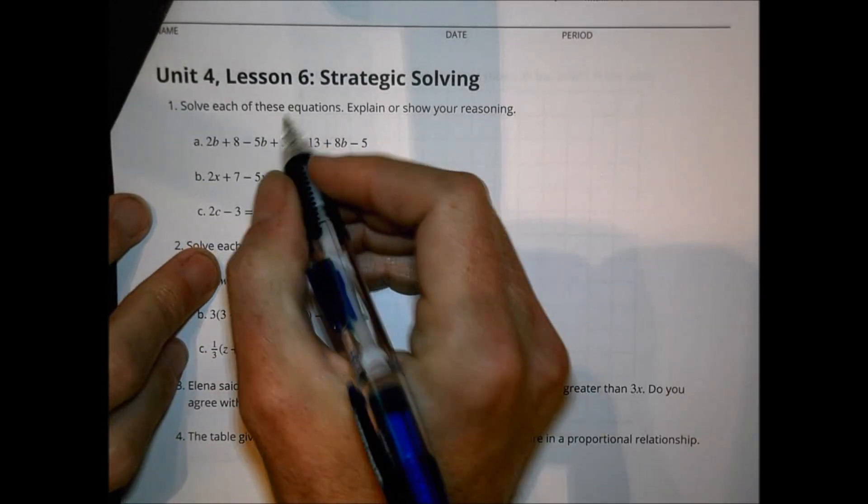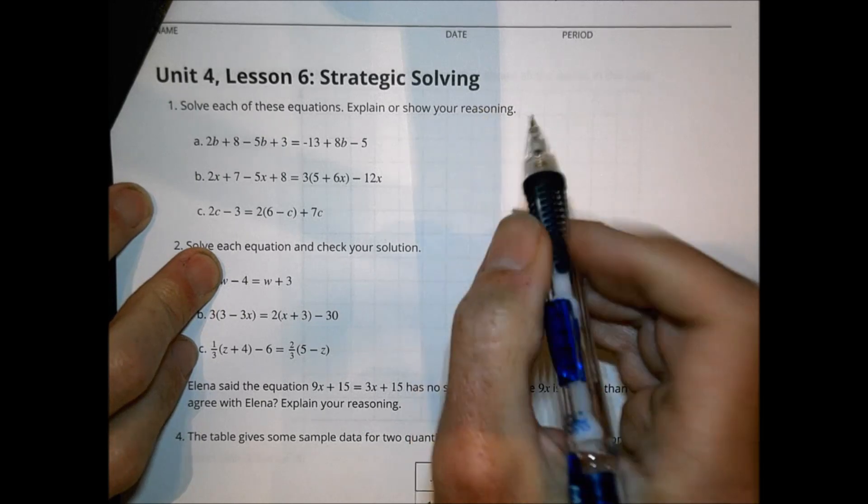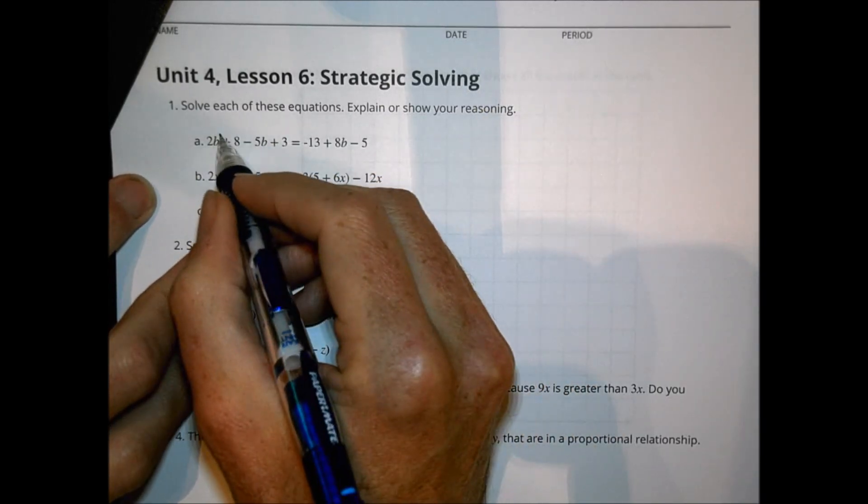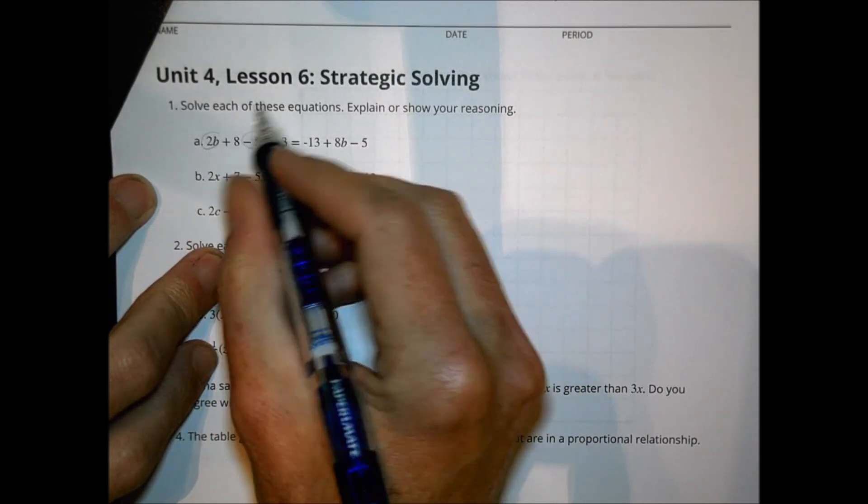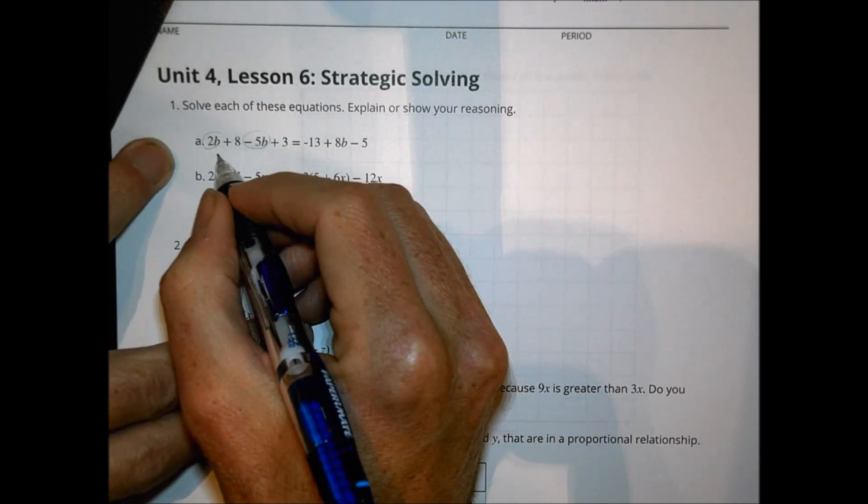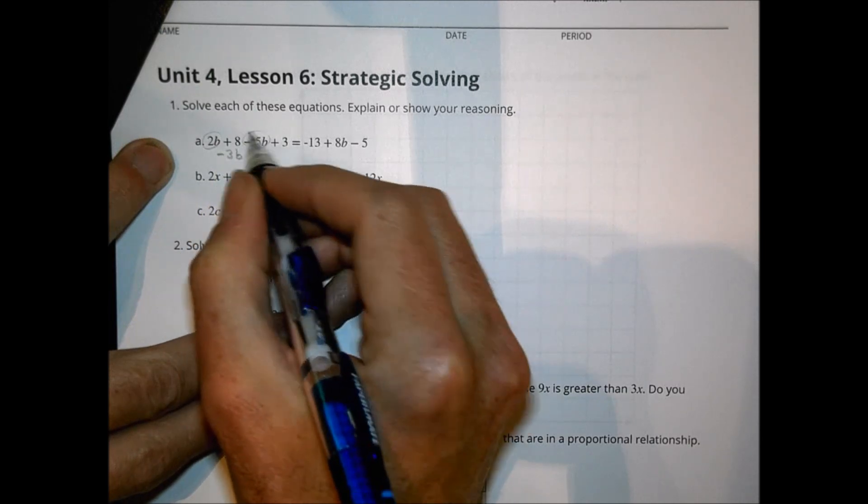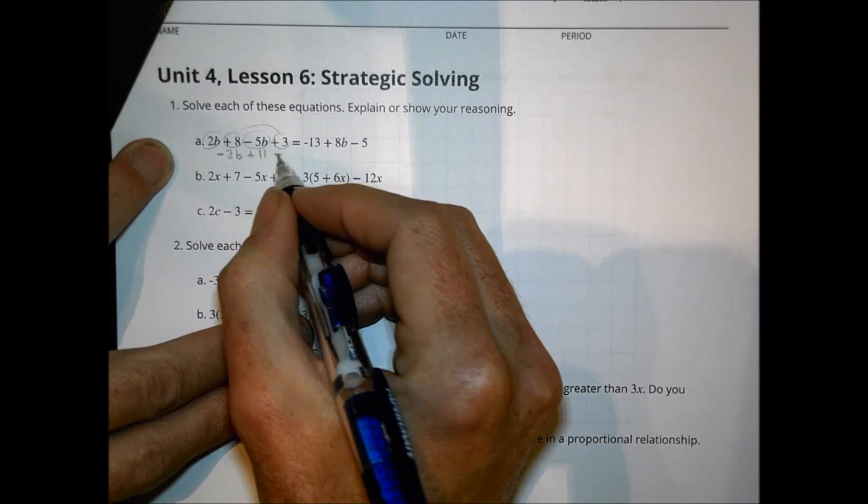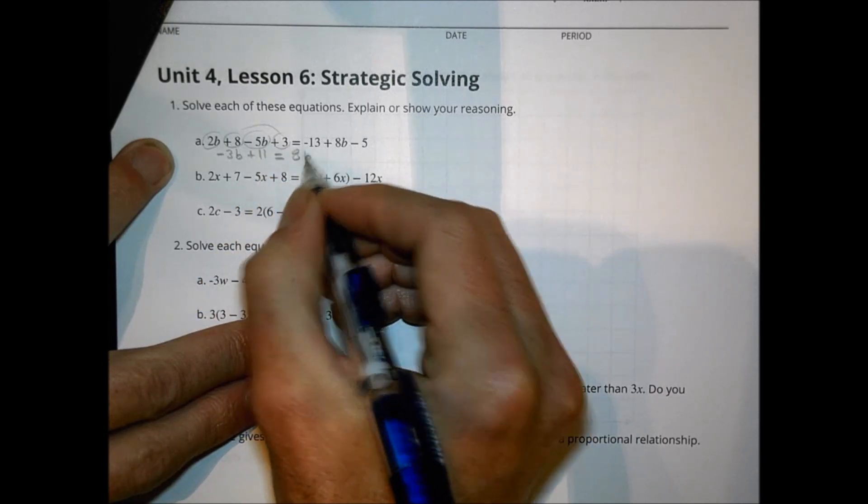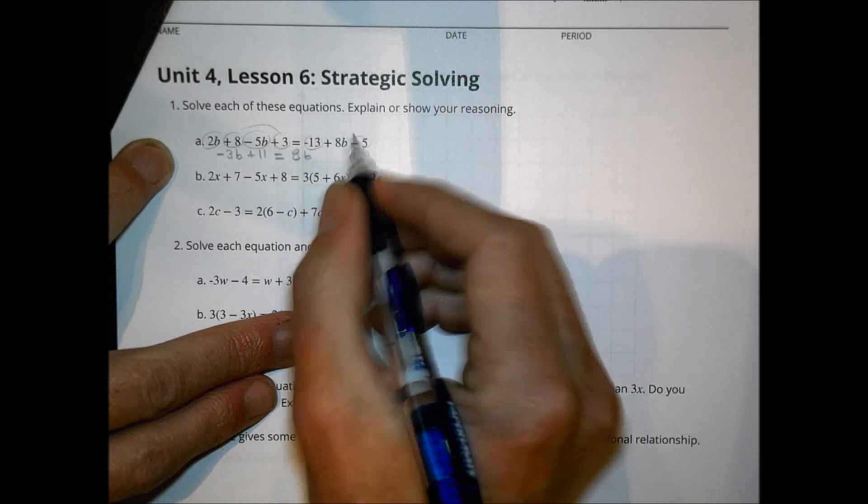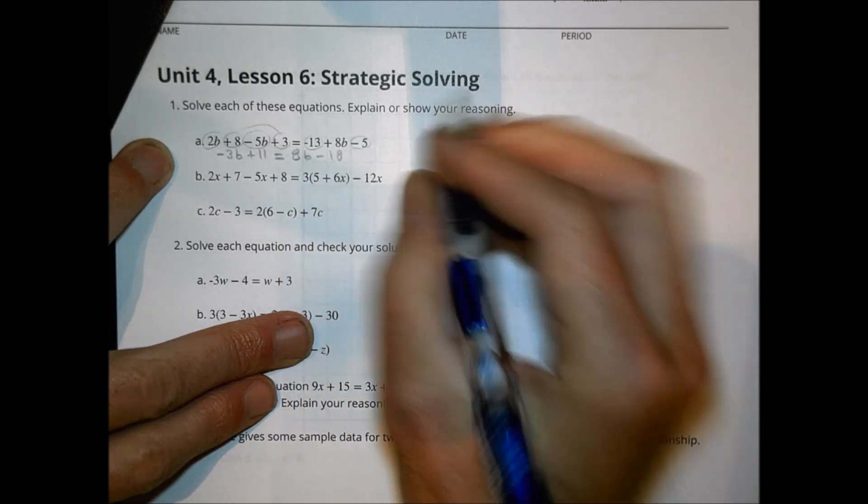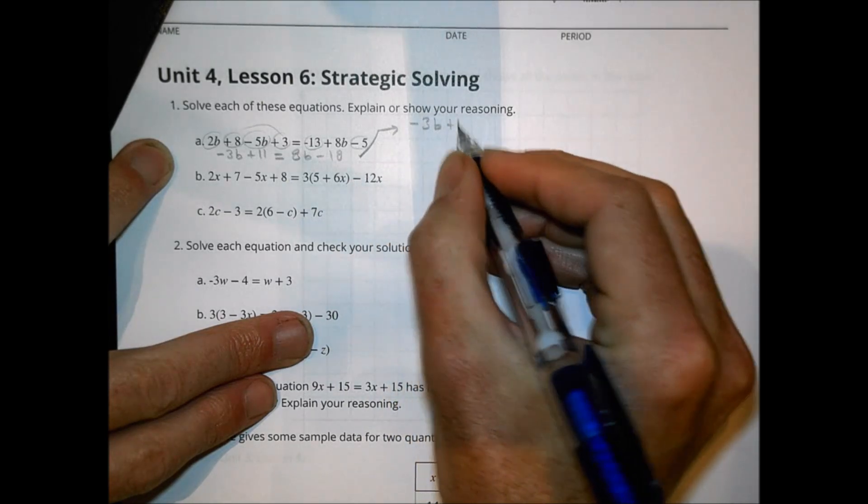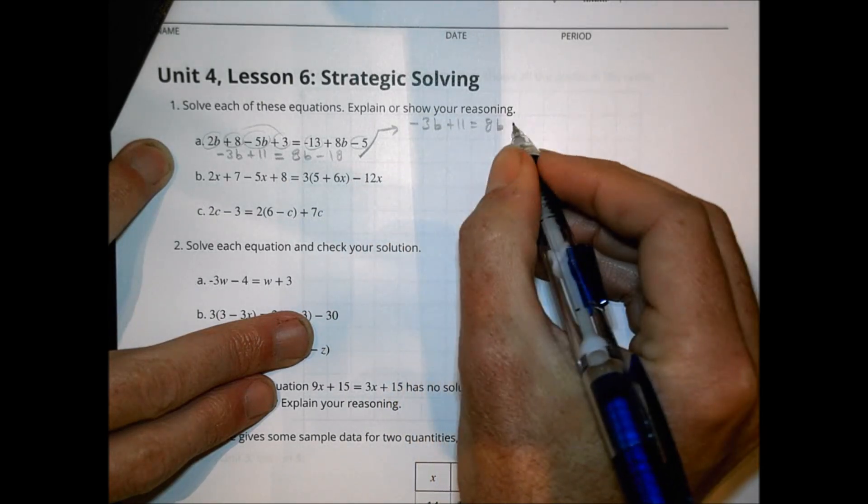Number one, it says solve each of these equations, explain or show your reasoning. Alright, so let's first of all combine some like terms. I have a 2B and a negative 5B on this side. That's a combined negative 3B. I have an 8 and a 3. So 8 and 3 make an 11. So I can rewrite that. And over here I still have an 8B and a negative 13 and negative 5 make it negative 18. So if I was to rewrite that, I have negative 3B plus 11 equals 8B minus 18.